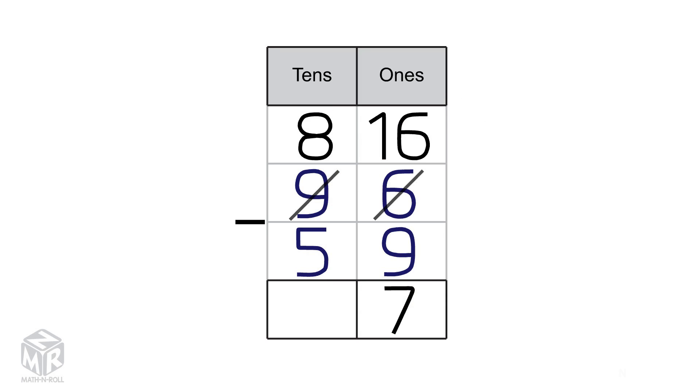Now we subtract the 10s: 8 minus 5 equals 3. So 96 minus 59 equals 37.